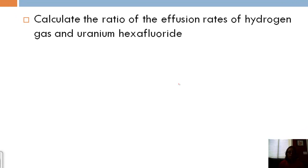So let's look at an example. So we want to calculate the ratio of the effusion rates of hydrogen gas and uranium hexafluoride. So I'm going to call gas one hydrogen gas, remember as a gas hydrogen is H2, and I'm going to call gas two uranium hexafluoride. Well uranium hexa is six, and so it's UF6.